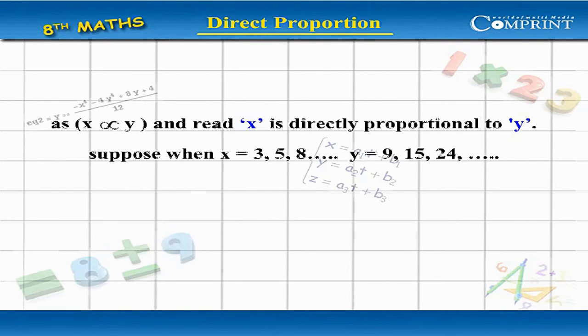We write this as x directly proportional to y and read 'x is directly proportional to y.'